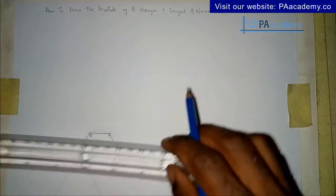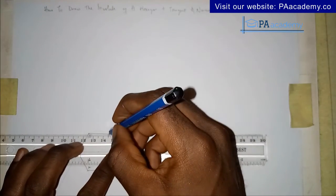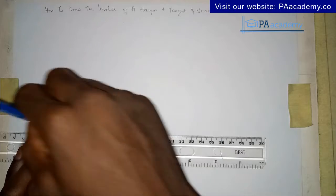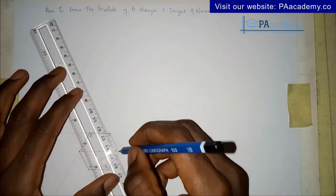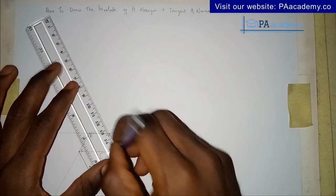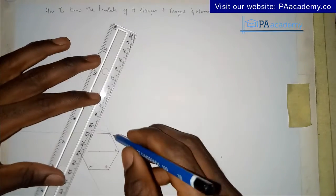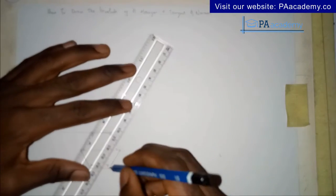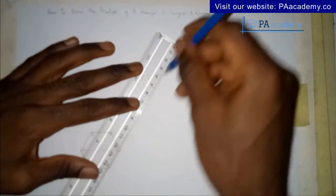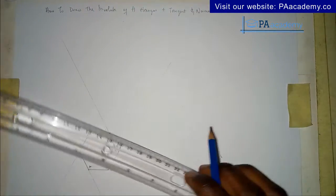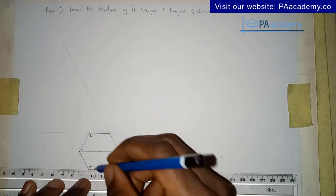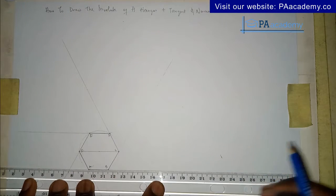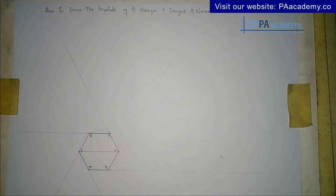Then extend line DE, then line CD, then line BC, and then extend line AB to the right. This is what you are going to be having. Next we bring in our compass set to the length of two centimeters, which is the length of AB.